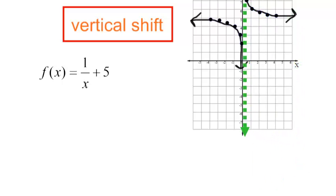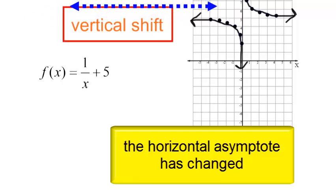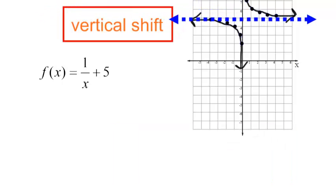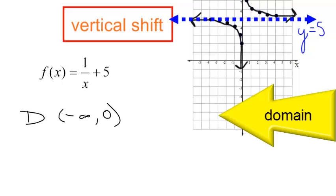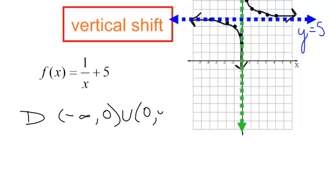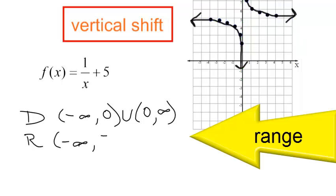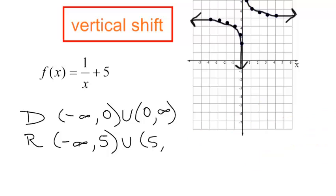Notice the vertical asymptote is still at x is equal to 0. But the horizontal asymptote has changed — it is now the line y is equal to 5. The domain is negative infinity all the way up to 0, stop, take a break, because I have a vertical asymptote and x cannot equal 0. Then it starts back right after 0 and goes to infinity. The range is a little different: negative infinity up to 5 — my graph never touches 5 — then right after 5 it goes to positive infinity.